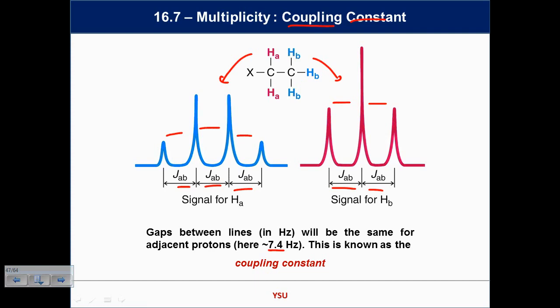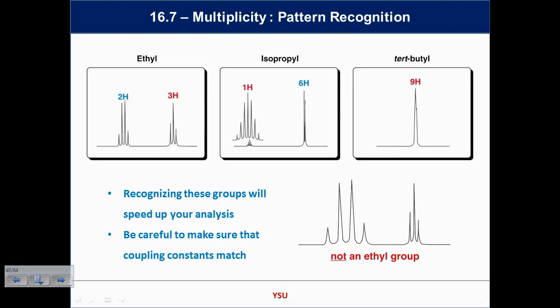For an ethyl group CH₃CH₂, the shape for HA (CH₂) is a quartet and the shape for HB (CH₃) is a triplet, with J ≈ 7.4 Hz. Measuring the same gap between lines in both signals confirms they are coupled neighbors. As you practice problems, matching coupling constants tells you which protons are next to each other and therefore what the overall structure is. You can see how extrapolating this to biology and biochemistry becomes very powerful for working out complex structures.